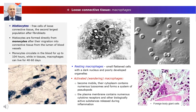Let us consider the properties of macrophages on the example of histiocytes — free cells of loose connective tissue and the second largest population after fibroblasts. Histiocytes are formed directly from monocytes after their migration into connective tissue from the lumen of blood vessels. Monocytes circulate in the blood for up to 104 hours, while in tissues, macrophages can live for 40 to 60 days.